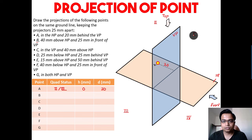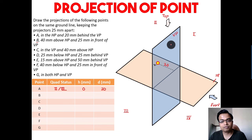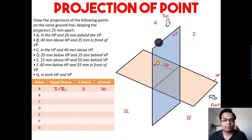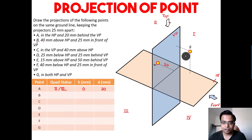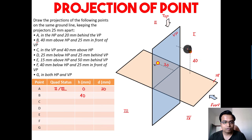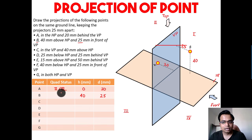Point B: 40mm above the HP and 25mm in front of the VP. Above the HP could be first or second quadrant. Since it's in front of the VP, it's clearly in the first quadrant. So h equals 40 — that's the distance from HP — and d equals 25, the distance from VP.